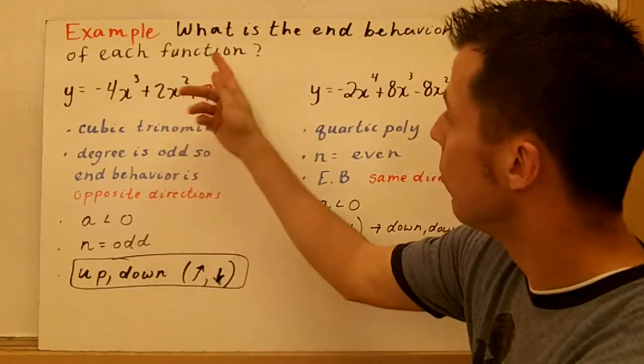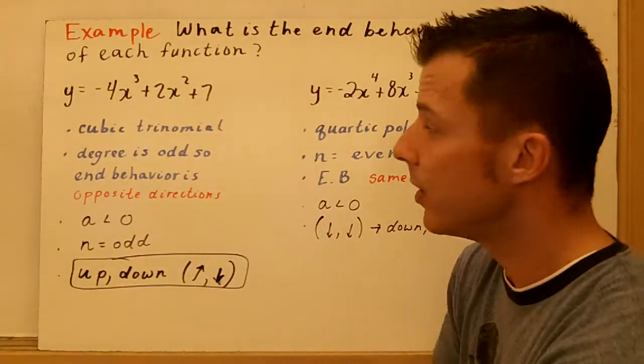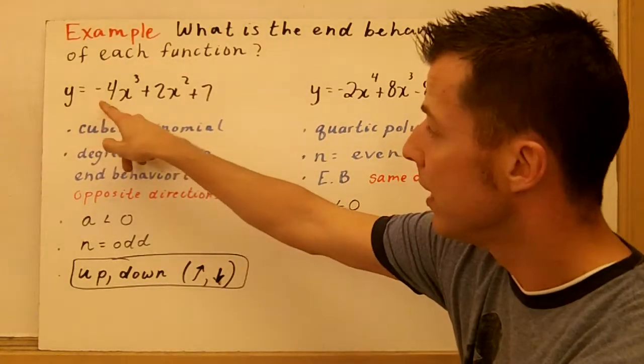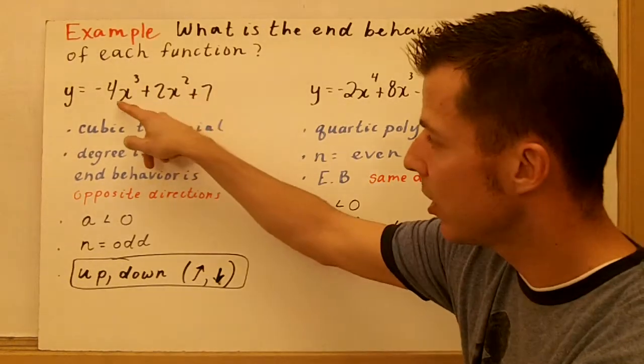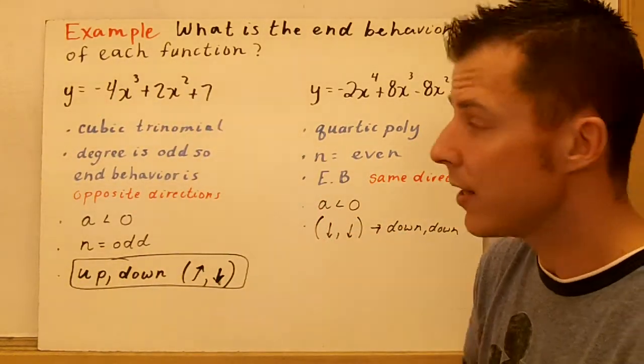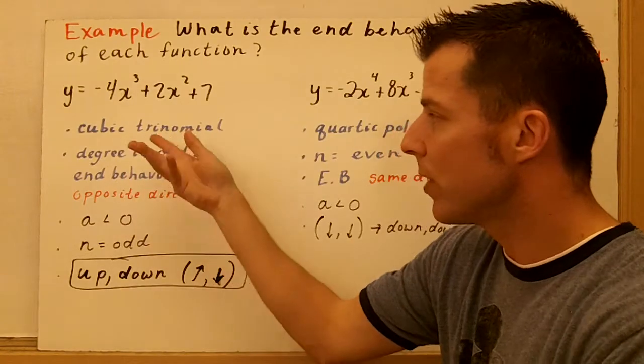So what is the end behavior of each function? Well, here's my first one, -4x³ + 2x² + 7. I only care about the leading coefficient. This is in standard form. It's a cubic trinomial.